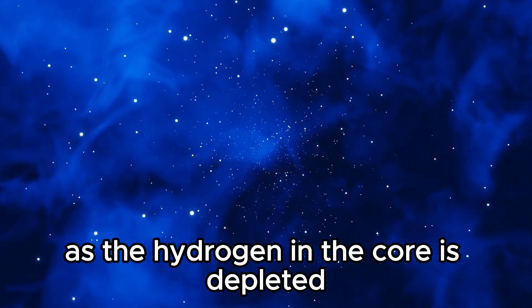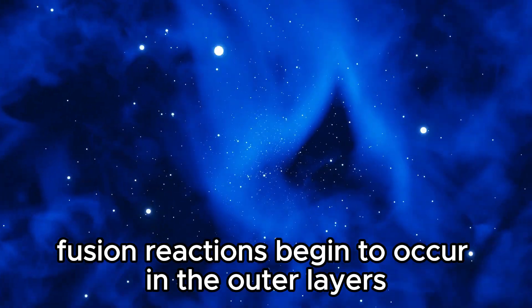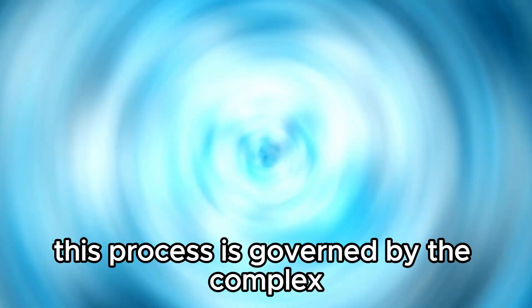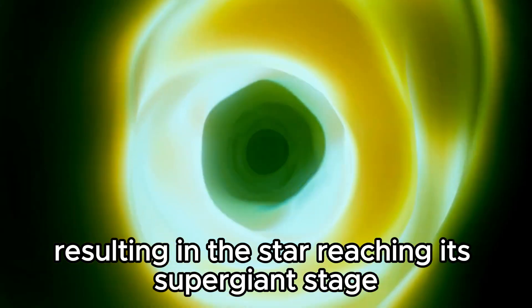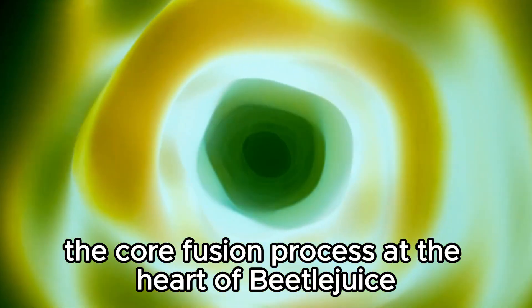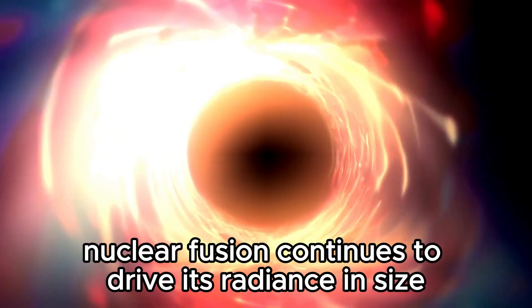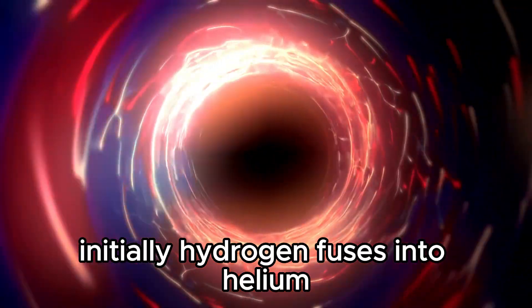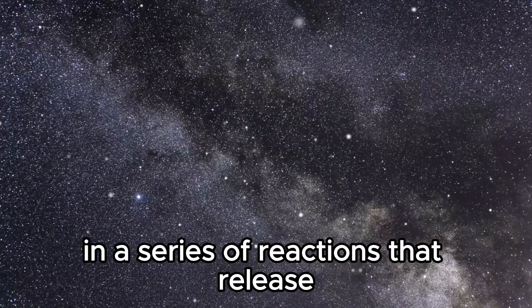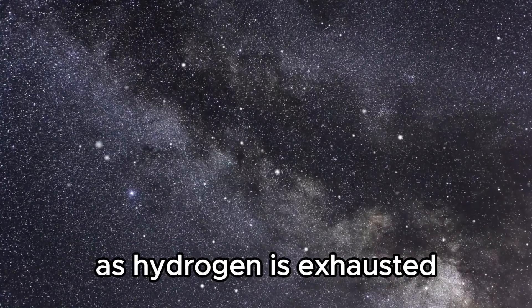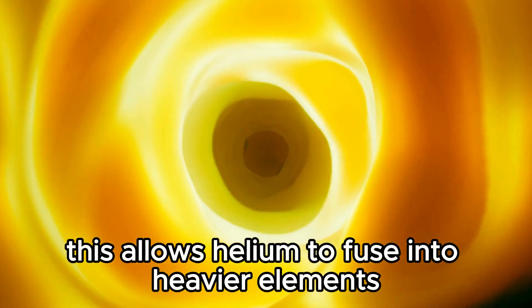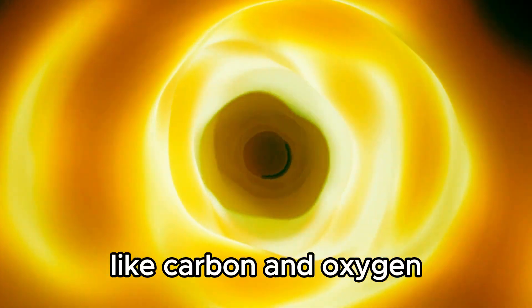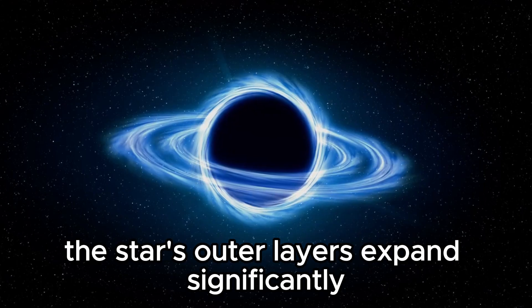Betelgeuse's core primarily consists of helium and heavier elements like carbon and oxygen. As the hydrogen in the core is depleted, fusion reactions begin to occur in the outer layers, leading to the star's expansion. This process is governed by the complex interplay of gravitational forces and radiation pressure, ultimately resulting in the star reaching its supergiant stage. The core fusion process: At the heart of Betelgeuse, nuclear fusion continues to drive its radiance and size. Initially, hydrogen fuses into helium in a series of reactions that release enormous amounts of energy. As hydrogen is exhausted, the core contracts under gravity, increasing temperature and pressure. This allows helium to fuse into heavier elements like carbon and oxygen. The star's outer layers expand significantly during this stage, resulting in its massive size and distinctive red color.